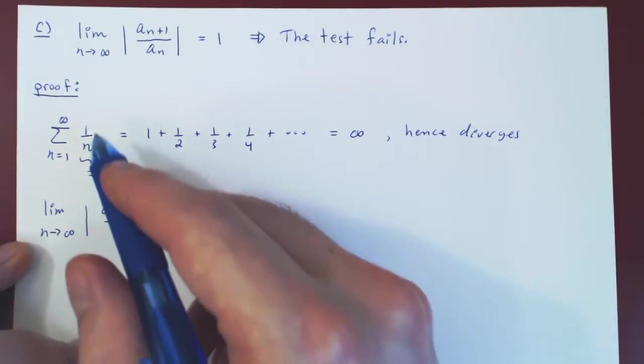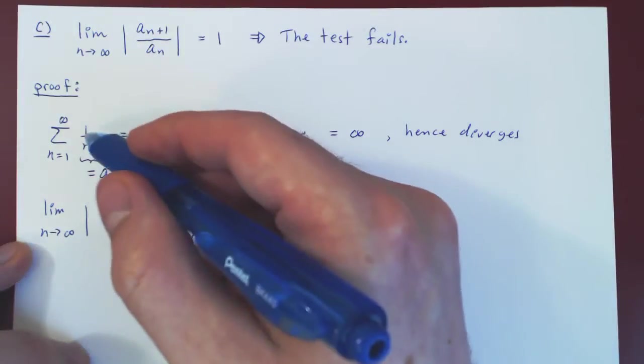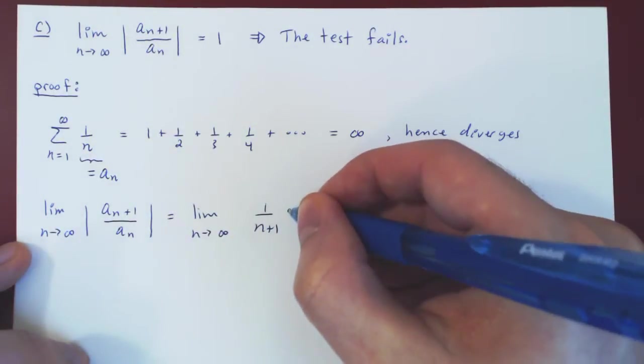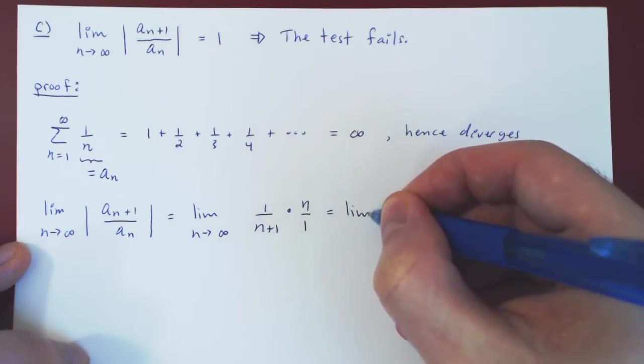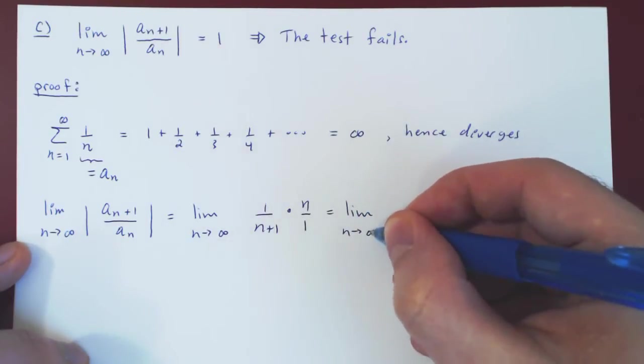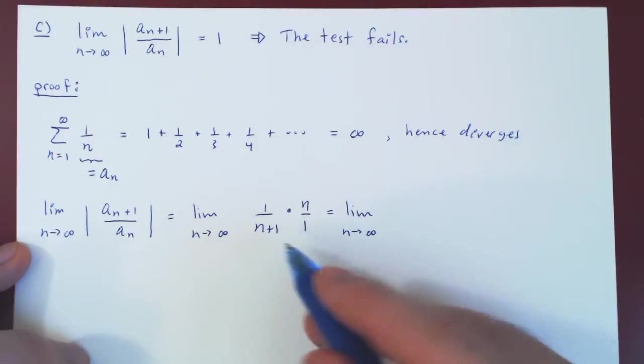And if you divide by a_n, you divide by 1 over n. If you divide by a fraction, you of course multiply by the reciprocal, n over 1. So that leaves you with n over n+1.